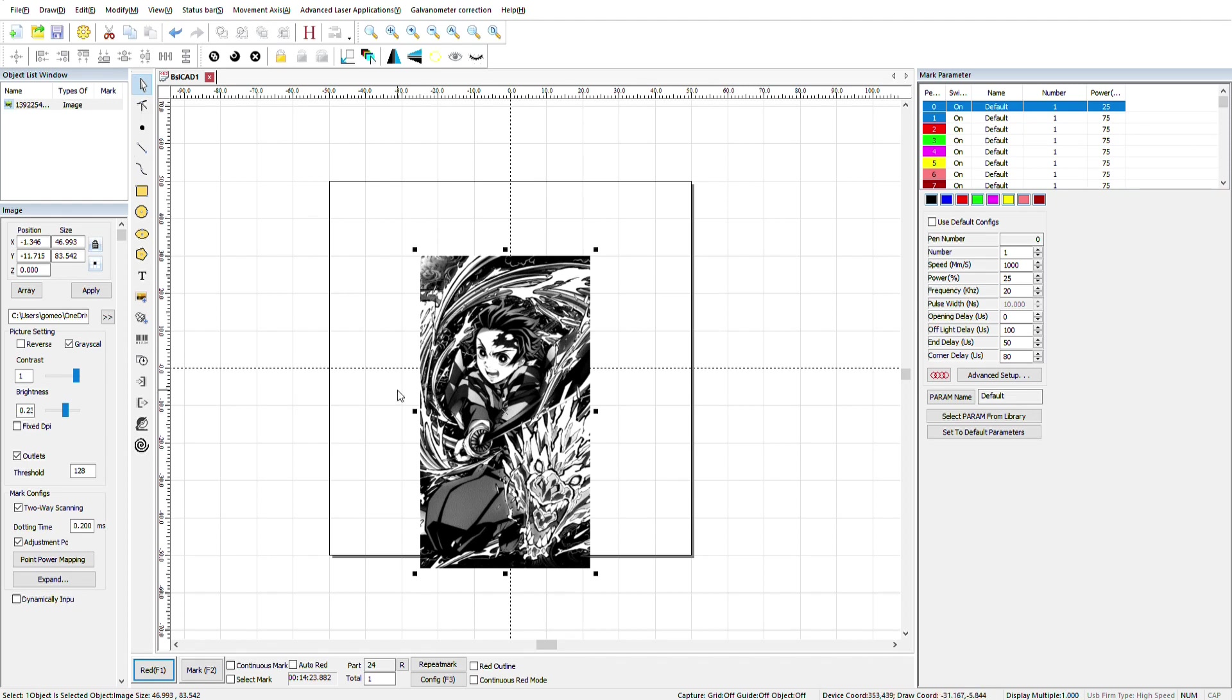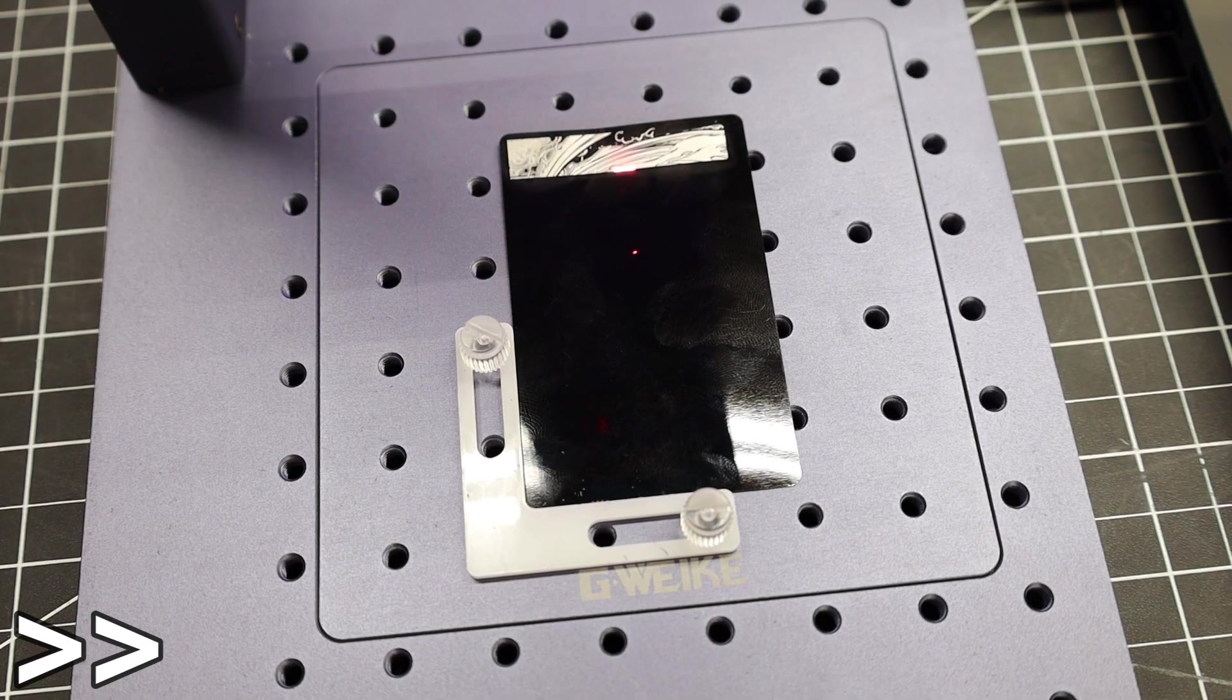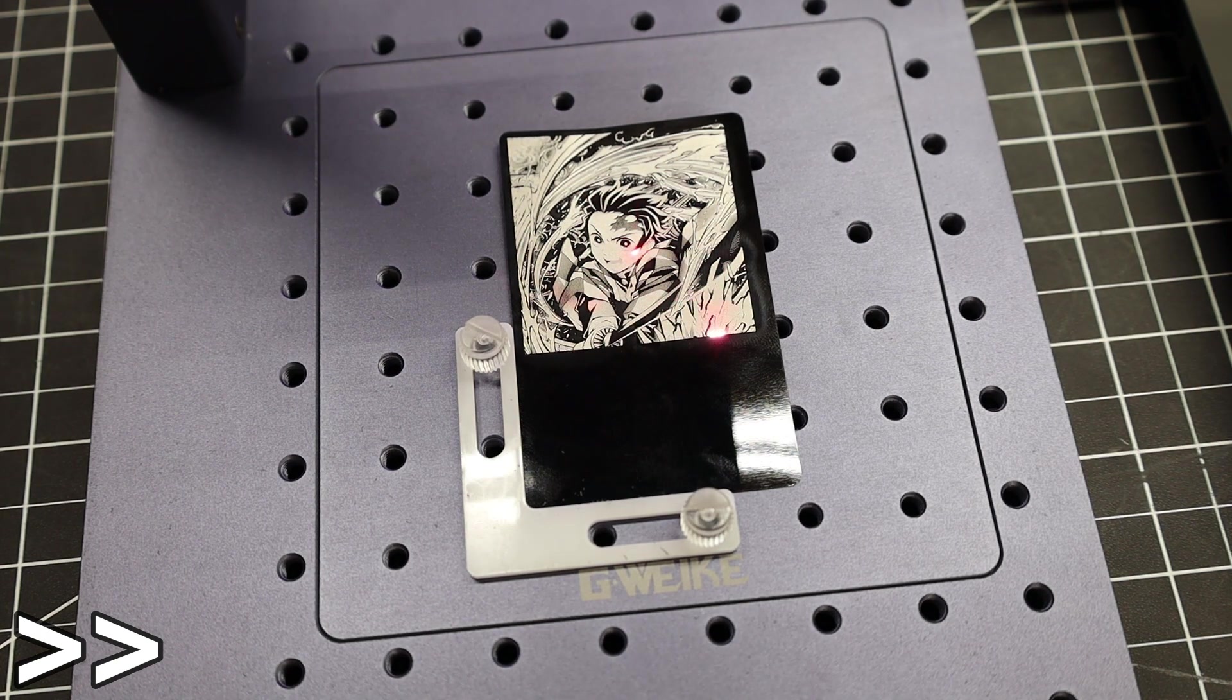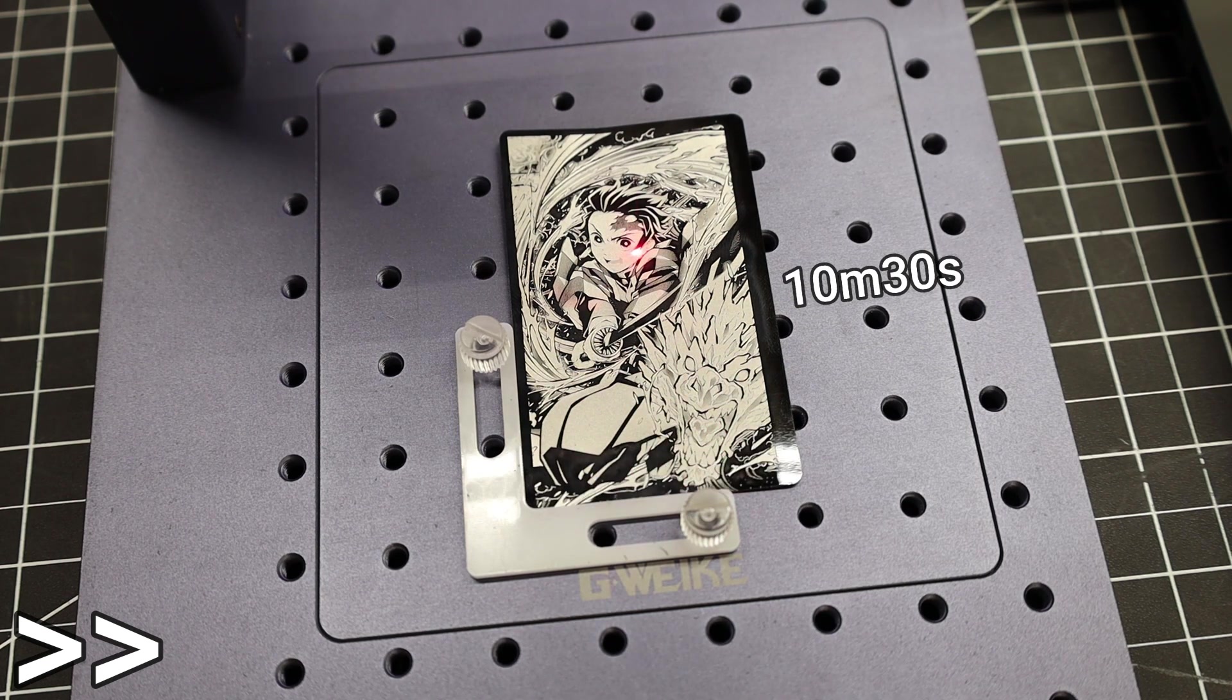Just keep in mind that you have to invert this, because the laser is going to be working off of grayscale. And the darker the area, the higher the power is going to be. And because I'm engraving this on a black card, all of my lines are going to be white. So that's another reason why I have to invert everything. And I did speed this up because it took 10 minutes and 30 seconds, but it looks like it came out pretty nice.